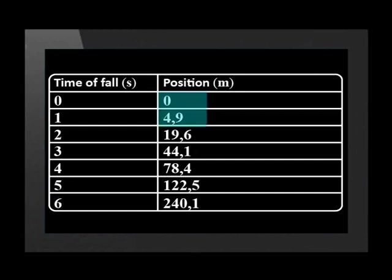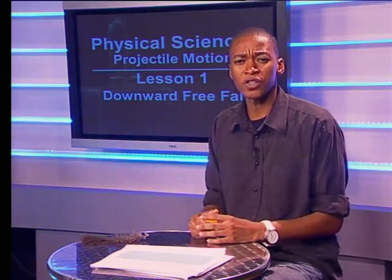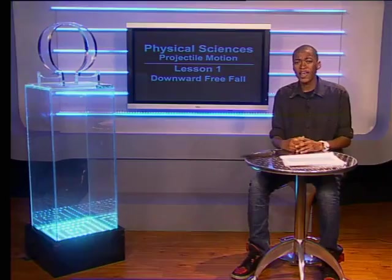So far we've looked at how velocity changes during free fall. Now let's look at how a projectile's position changes during free fall. The ball in free fall covers longer and longer displacements during each second it falls — that isn't surprising because the ball is getting faster and faster, as it is both accelerating downward and moving downward.